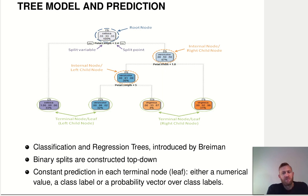And this could be either a class label or even a probability vector over such labels. Then we're talking about a classification tree. Or it could just be a number, a numerical value, then we're talking about a regression tree.